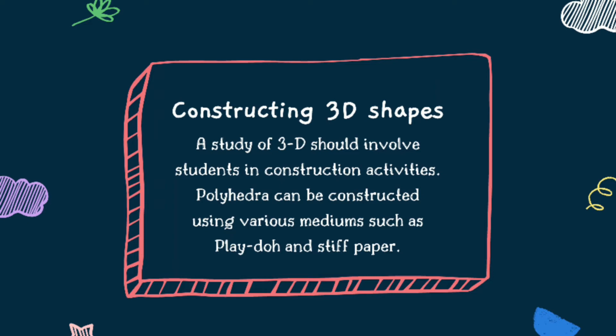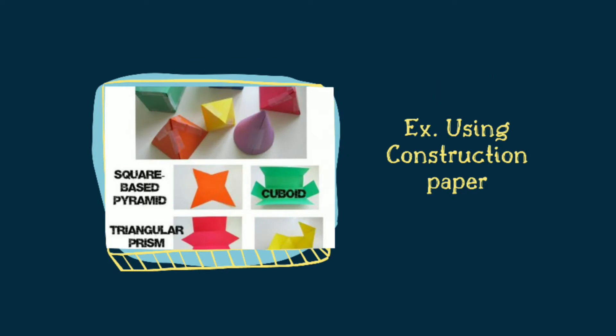Students can construct skeleton or edge models of polygons and polyhedra using different materials. Construction must be followed by descriptions and comparisons and discussions about successful and unsuccessful construction attempts. Polyhedra can also be constructed with modeling clay. The stroke of the knife through clay models serves to exemplify a plane passing through at given angles. In this manner, truncated figures can be formed to display different sections of solids.